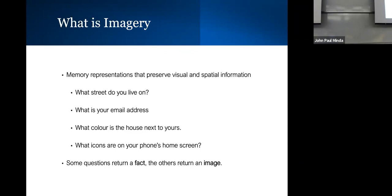The next class, which is online, is going to be on general theories of knowledge representation, including perceptual symbol systems and moving into abstract knowledge representation systems. Then we'll talk about a very specific kind of knowledge representation — a concept or category — which will give us background for understanding how knowledge is represented in the mind. All of that is going to be included on the quiz.